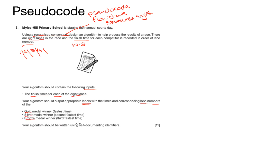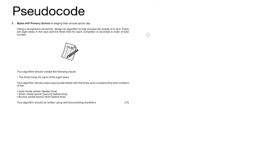The gold will be the fastest time entered into our system, the silver will be the second fastest time, and the bronze the third fastest time. When it asks us to use self-documenting identifiers, that means any variable in our pseudocode should represent exactly what it's storing — so for example, the variable 'total' will store the total. Now I've finished my fact-finding, it's time to start writing some pseudocode.